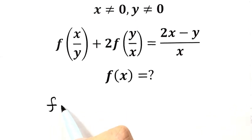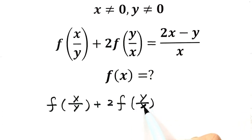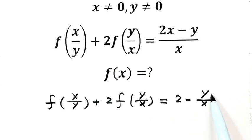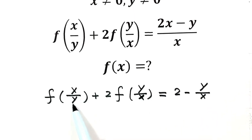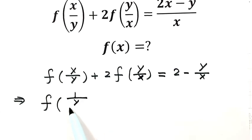The left-hand side: f of x over y plus 2 times f of y over x. Then for the right-hand side, we're going to separate it into two parts, so that's 2 minus y over x. Because here we have y over x. So next we can rewrite this part: f of 1 over (y over x), which is just x over y.